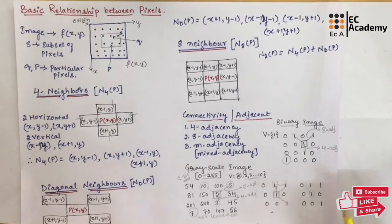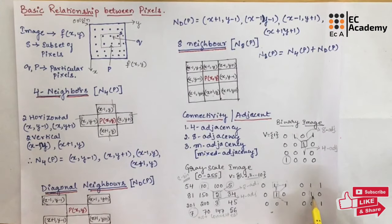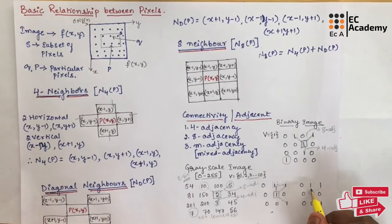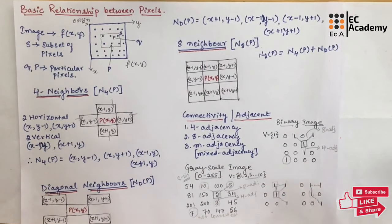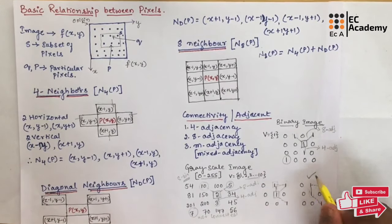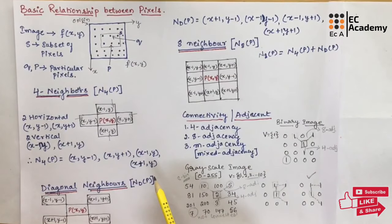In mixed adjacency, if you can connect in a straight line, you should not connect in diagonal form. So between two pixels that have a straight-line path, that path is used, and diagonal connectivity is only used where no straight-line connection exists. This is the correct way of connecting pixels and eliminates the ambiguity of 8 adjacency. This covers the basic relationship between pixels. Hope you have understood the topic. Thank you.